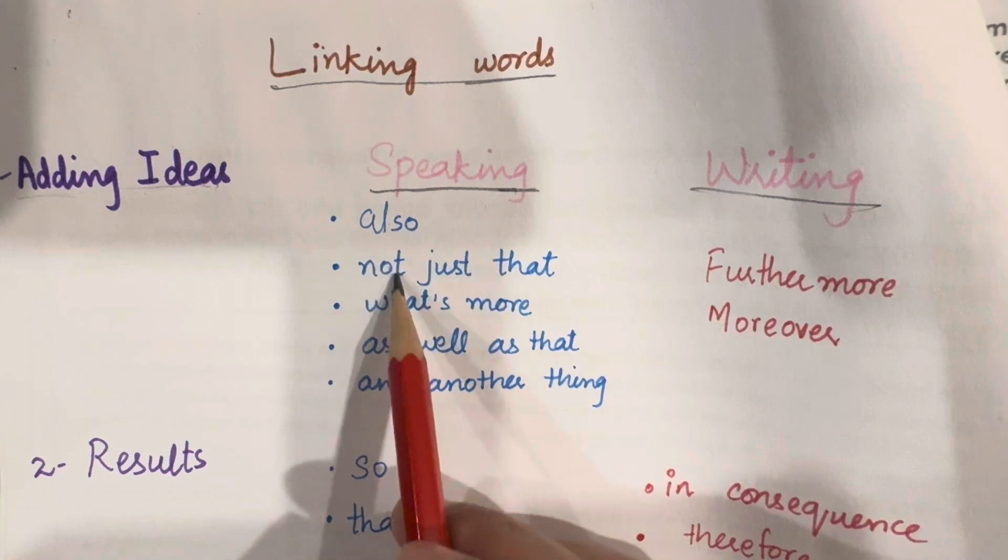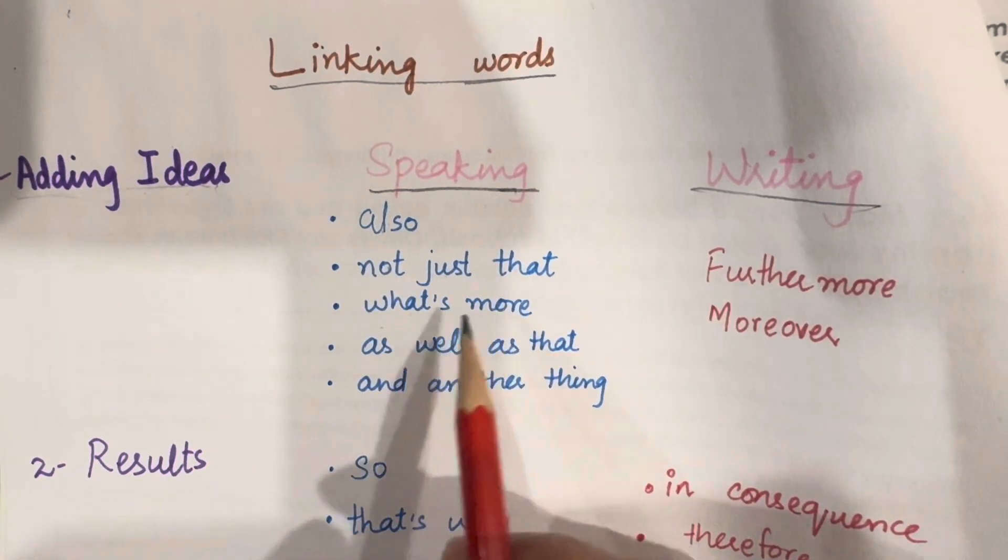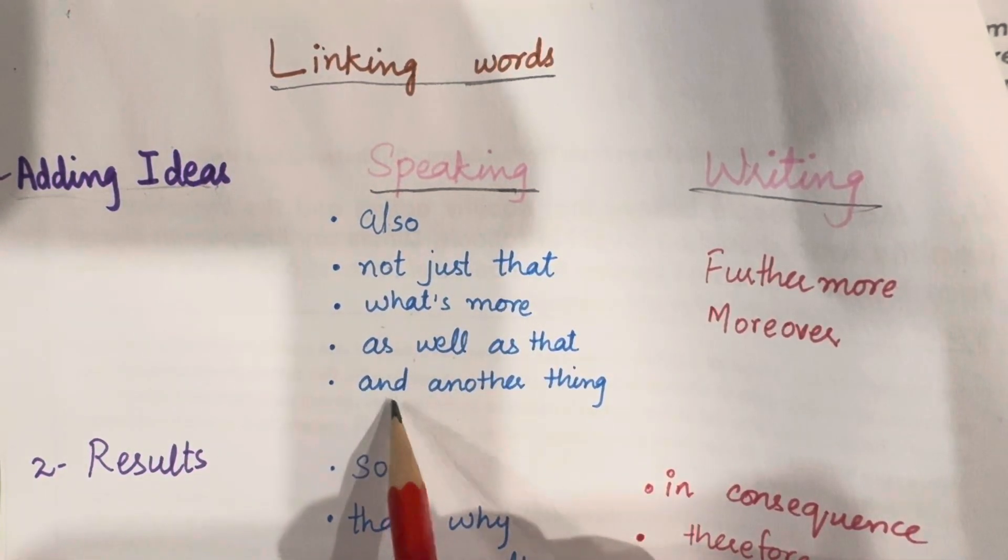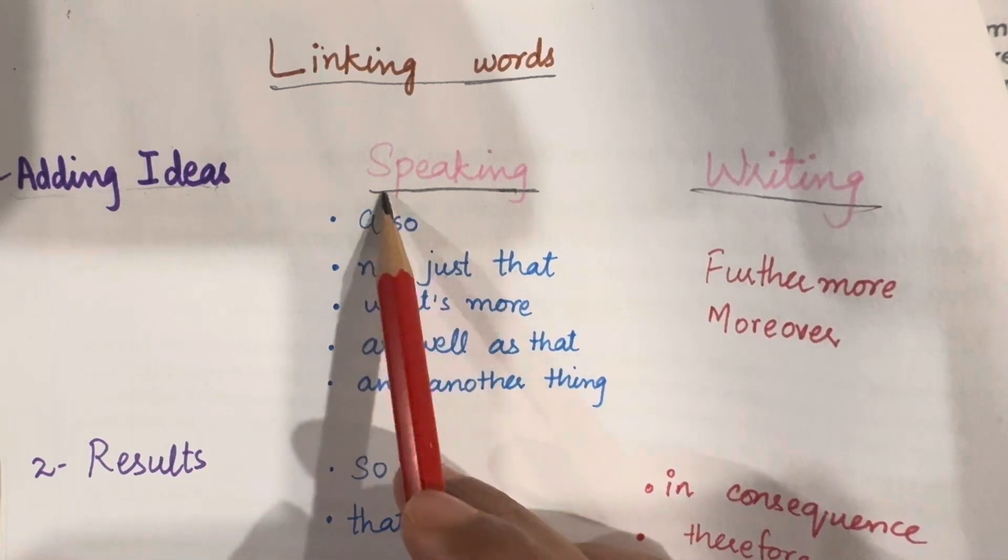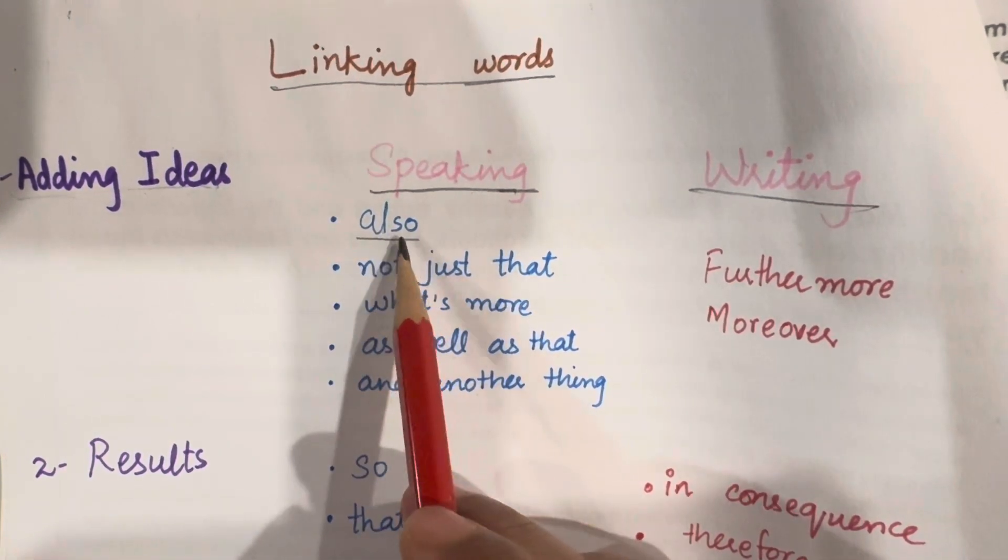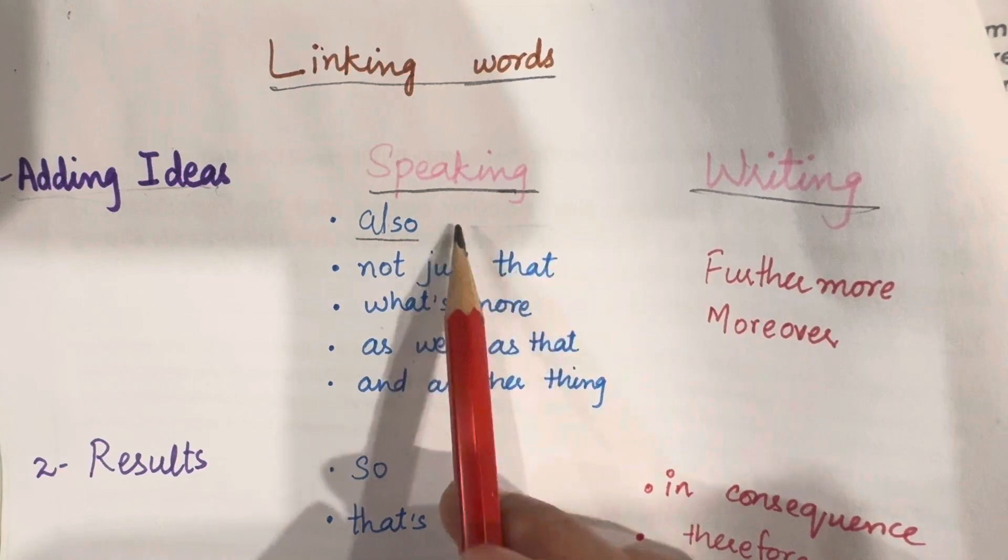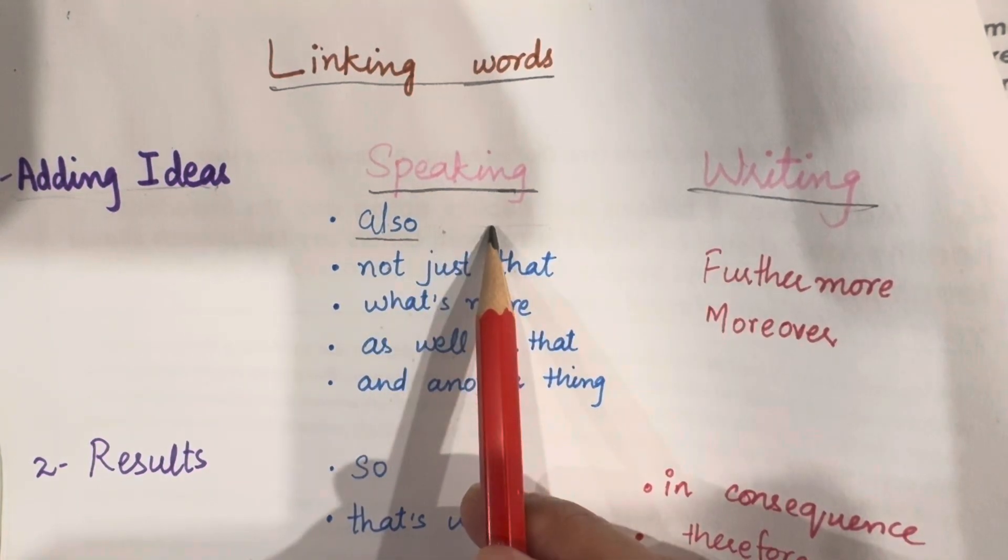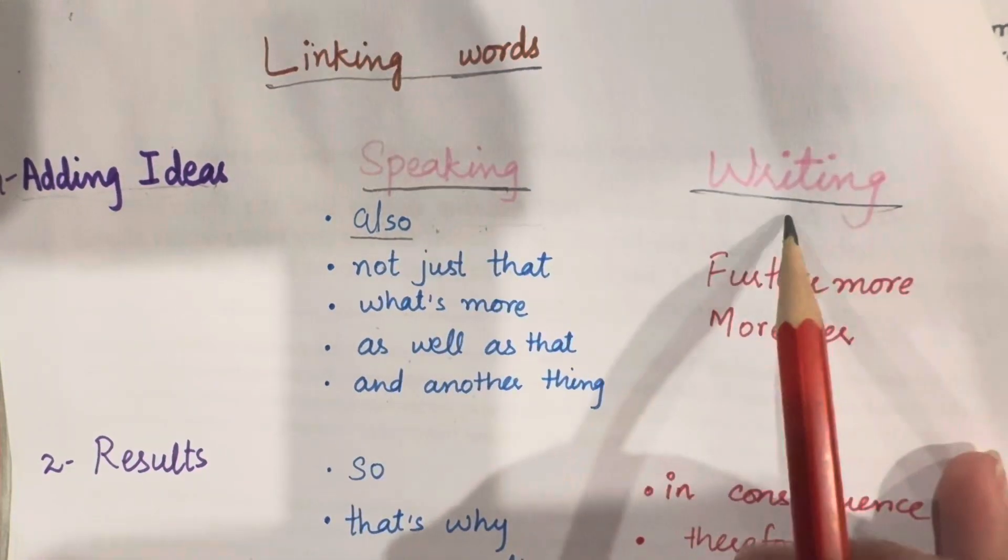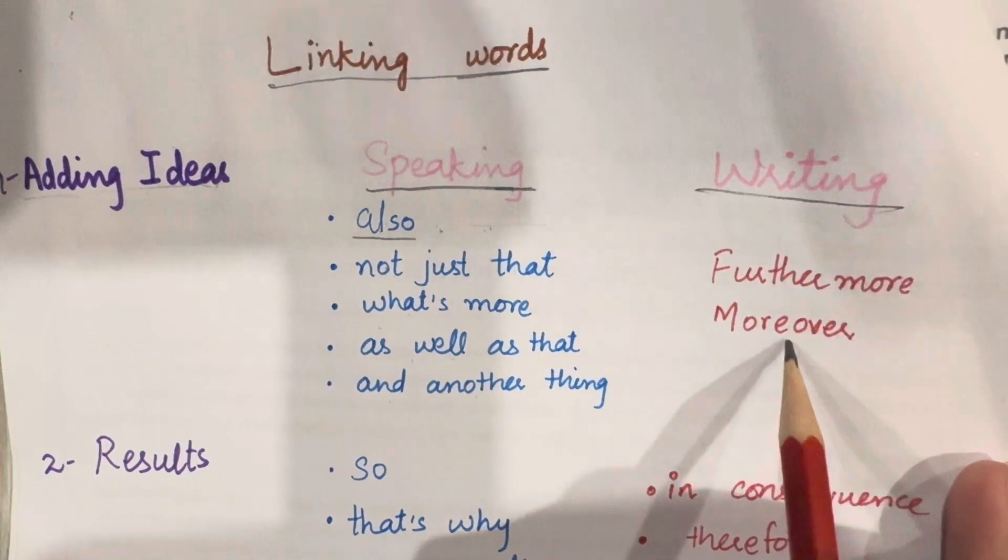So for adding ideas, that means you talk about something and you want to add something more. For speaking, you can use also, not just that, what's more, as well as that, and another thing. And for writing, you can use furthermore and moreover.